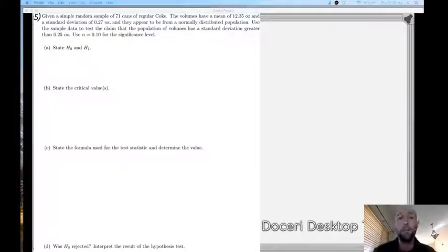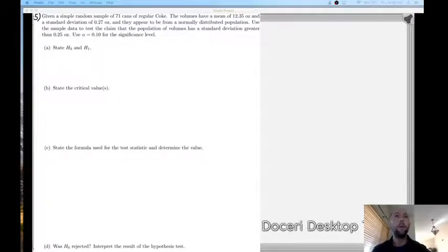So as usual, the first thing we want to do when solving a hypothesis testing problem is go through and state the null and the alternative hypothesis, and we do that by going through and finding our claim.